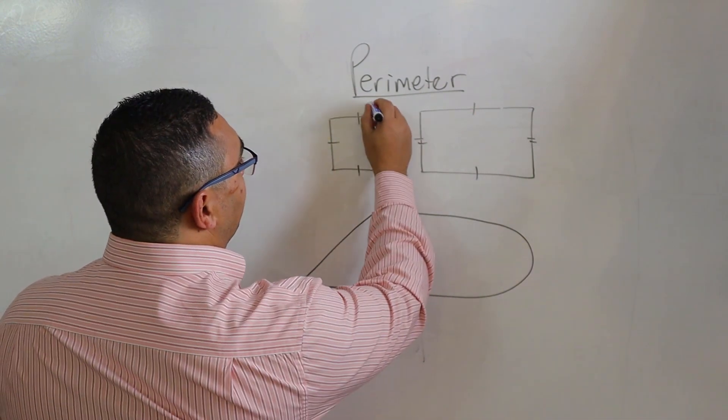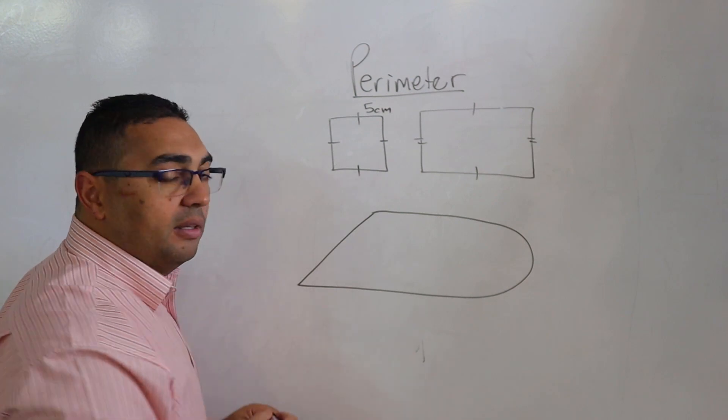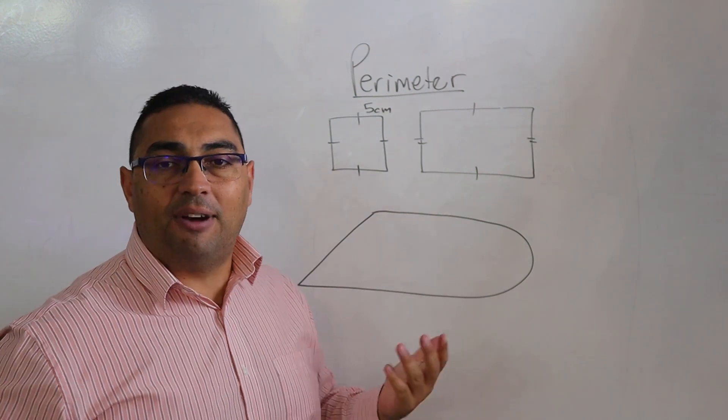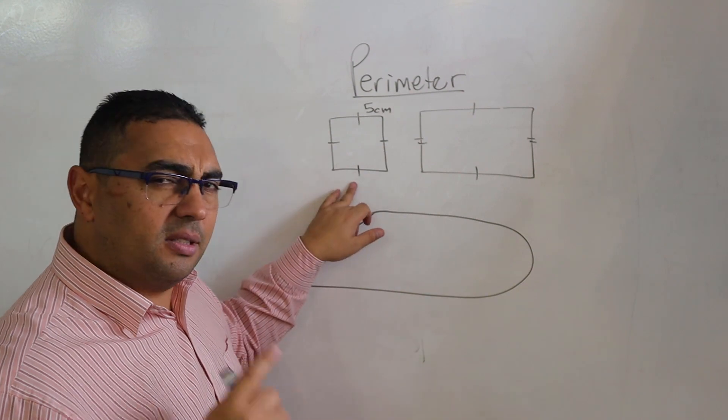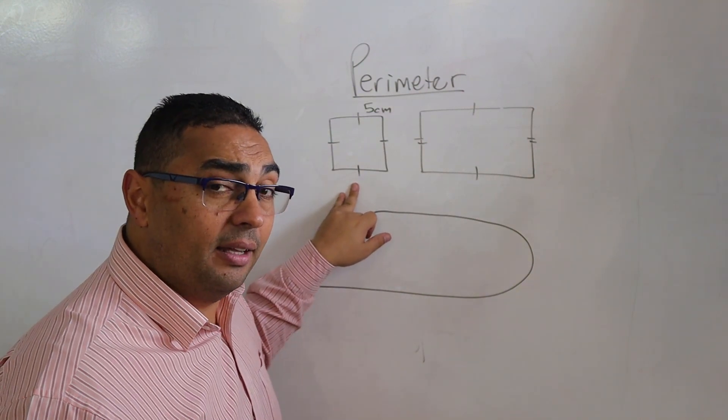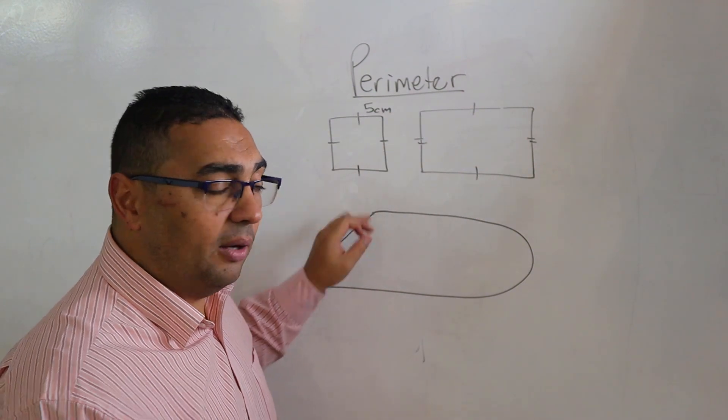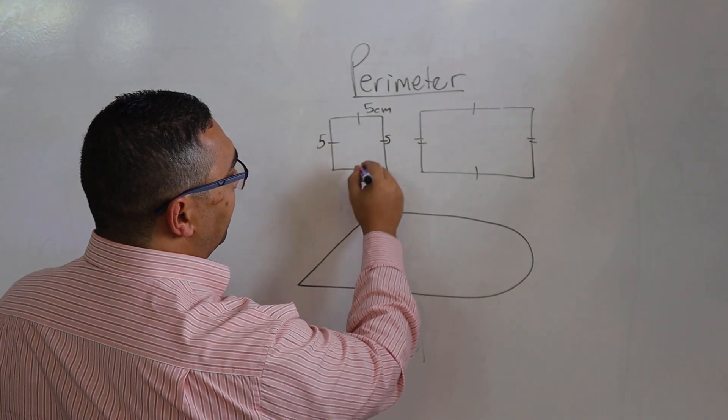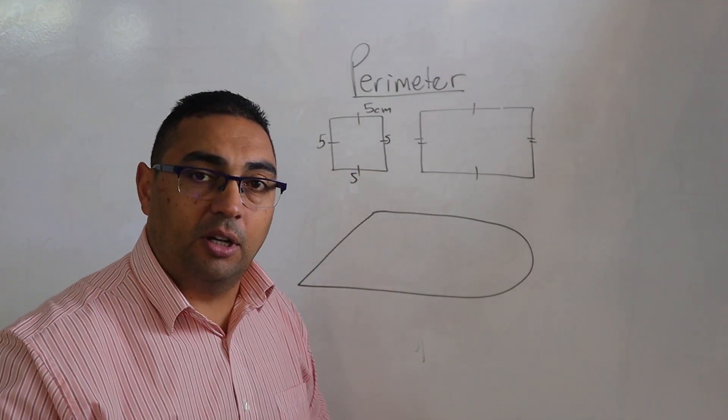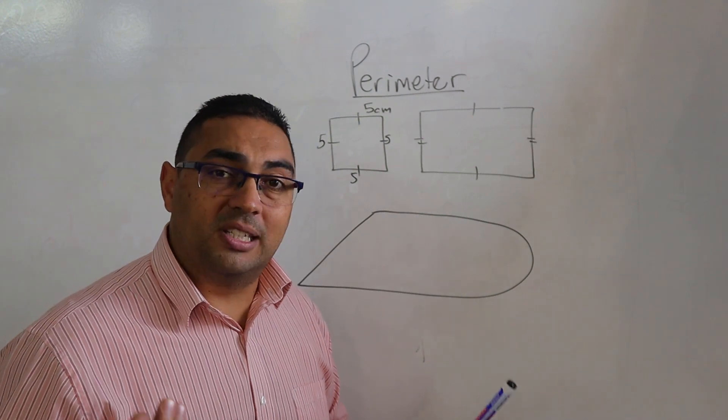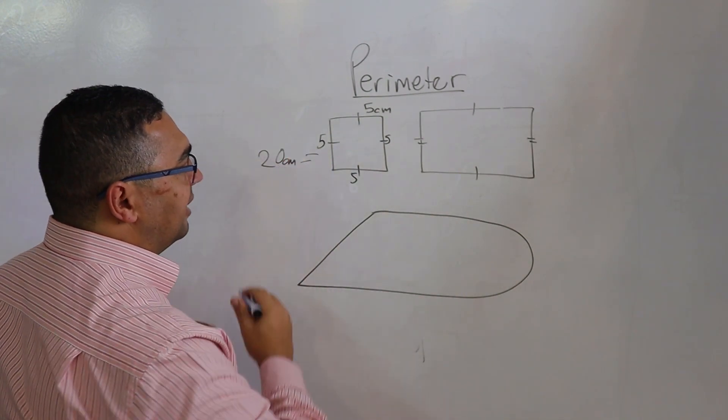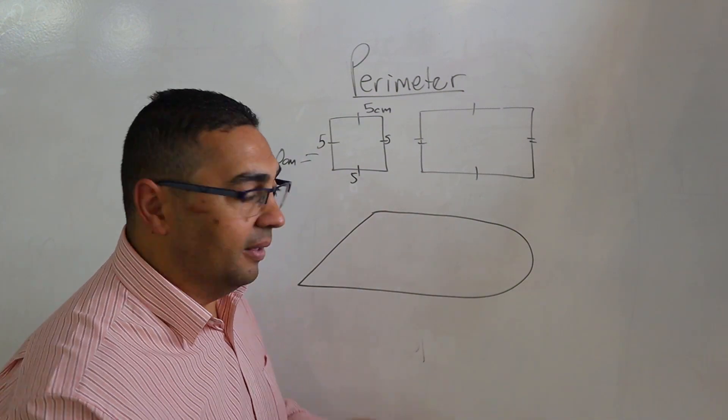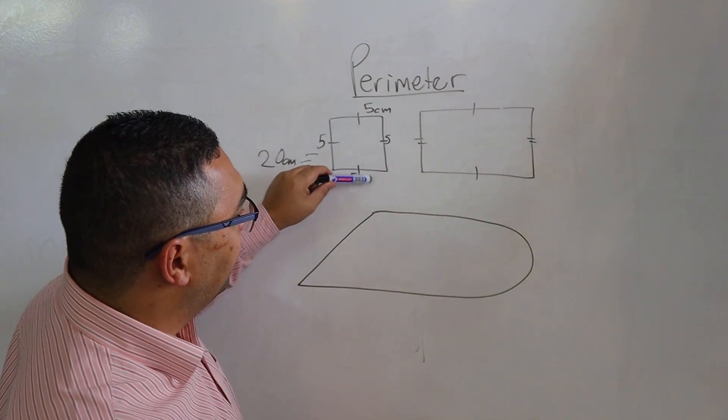So let's say with my square they just give me a measurement on one side of five centimeters. Is that a problem? No, it's not, because if we remember, a square has what? Equal sides all around. Which means if one is five, the other is going to be five, the other is going to be five. All of them are going to be five. And then what do we do? We simply add it up and we end up with 20 centimeters as our perimeter. That's the length all the way around.